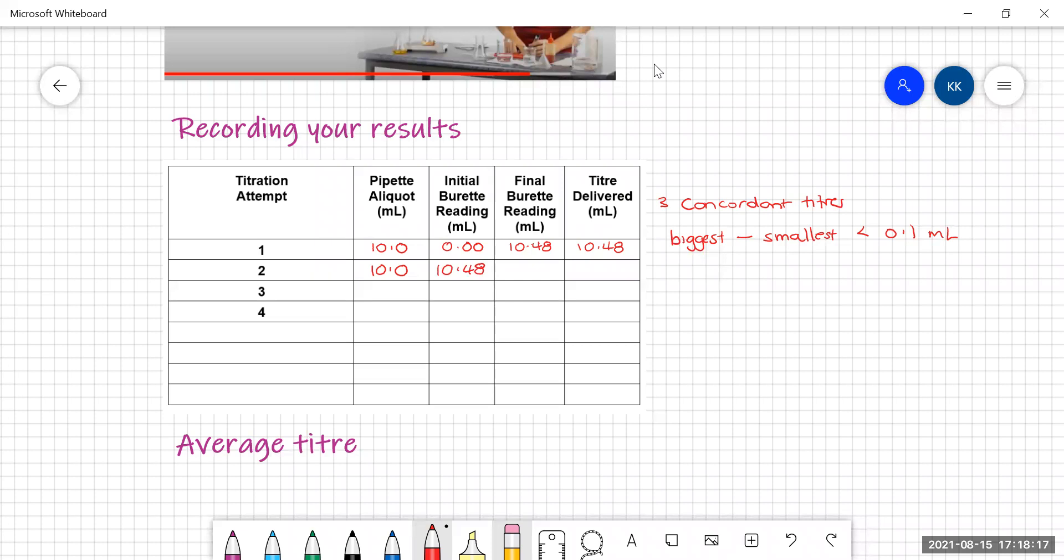This time when the indicator changed color, my end volume was 20.98 mils. And that means that my titer's value was 10.50. Now these two titers are concordant because they're only different by 0.02 mils. So I only need one more that is that close and my titration is finished.